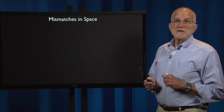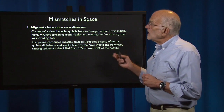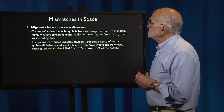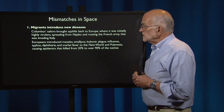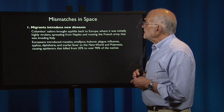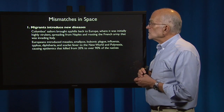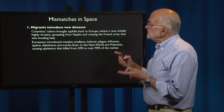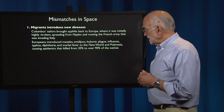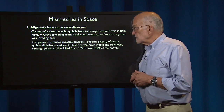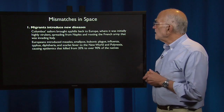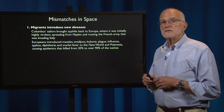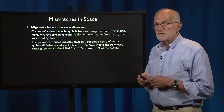What about mismatches in space? Migrants introduced new diseases. Columbus's sailors brought syphilis back to Europe, where it was initially highly virulent, spreading from Naples and routing the French army that was invading Italy. Europeans, on the other hand, introduced measles, smallpox, bubonic plague, influenza, typhus, diphtheria, and scarlet fever to the New World and to Polynesia, causing epidemics that killed from 20% to over 90% of the natives.